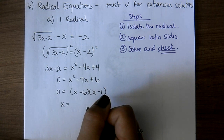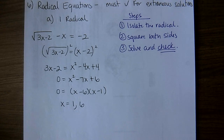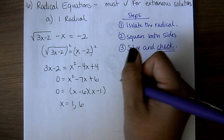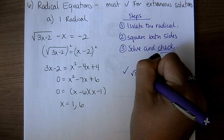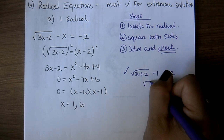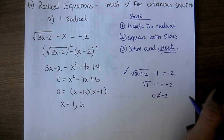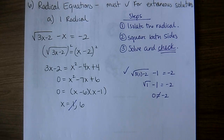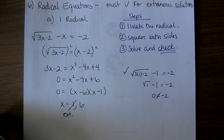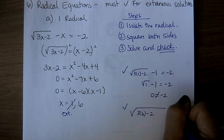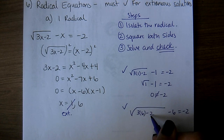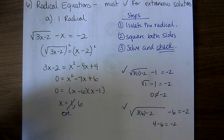Step three says solve and check, so I have to check my solutions by plugging them in. Checking x equals 1: square root of 3 times 1 minus 2 minus 1 equals negative 2, which gives square root of 1 minus 1, so 1 minus 1 is 0, and 0 does not equal negative 2. So 1 is a bad solution — it's called an extraneous solution. Checking x equals 6: square root of 3 times 6 minus 2 minus 6 should equal negative 2. That gives square root of 16, which is 4, and 4 minus 6 is indeed negative 2. So the only good solution is x equals 6.